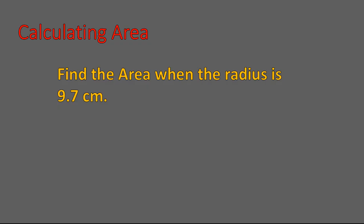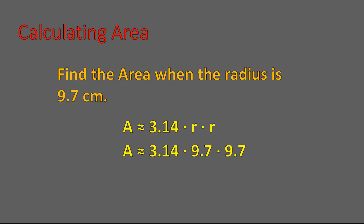So let's go ahead and do it. Find the area when the radius is 9.7. Using our equation, all we need to do is 3.14 times 9.7 times 9.7, and that gives us 295.4426 square centimeters. It's a bit of an unusual number, but all you're doing is multiplying 3.14 times the radius times the radius.